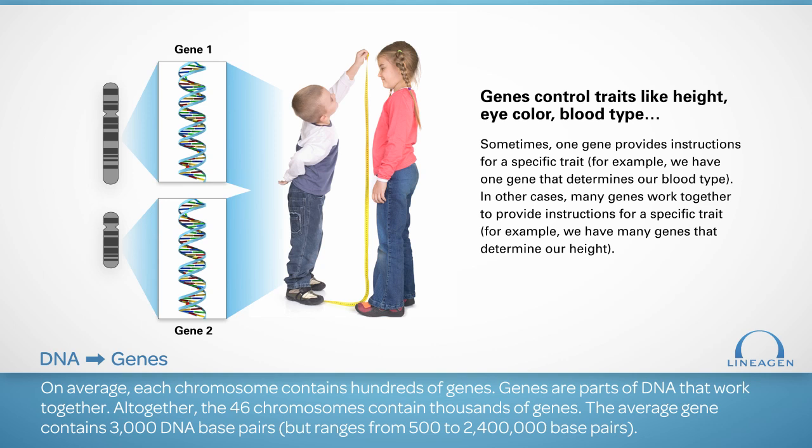Genes are parts of DNA that work together to help guide a part of human growth and development. Altogether, the 46 chromosomes contain thousands of genes. Some genes work alone, while others must work together. For example, there is one single gene that determines a person's blood type, while multiple genes work together to determine a person's height. These end results, like blood type and height, are called traits.